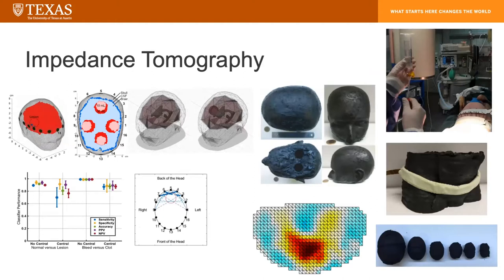Electrical Impedance Tomography (EIT) is what I've been working on for about two years. The way it works is you put an array of electrodes around whatever you're measuring. The work I'm focusing on is brain stroke detection — you put a ring of electrodes or a net of electrodes on top of the head and inject current between two electrodes. As the current travels through the head, voltages appear on the other electrodes; you measure all those voltages, step through each pair, and you can make a tomographic image.